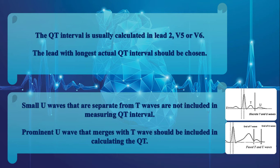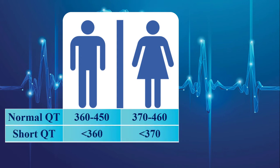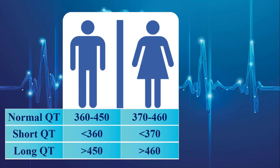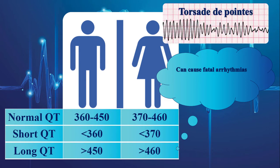Before going through practical examples, remember that the normal range of corrected QT interval is 360 to 450 milliseconds for men, and 370 to 460 milliseconds for women. Values lesser than 360 to 370 milliseconds are so-called short QT interval, while values greater than 450 to 460 milliseconds are known as prolonged QT interval. Long QT interval may be associated with dangerous arrhythmias, especially polymorphic ventricular tachycardia. Values greater than 500 milliseconds are considered too long and dangerous for any age or gender.